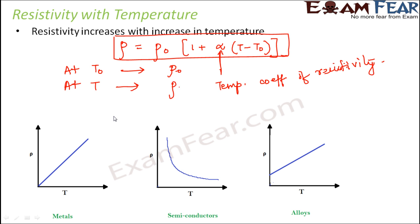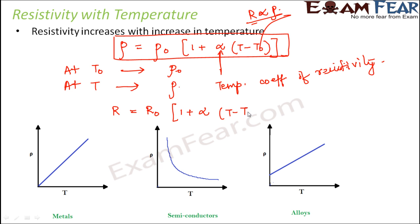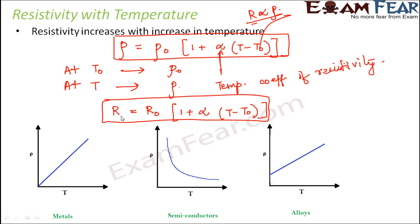Since resistance depends on resistivity (R = ρL/A), when resistivity changes, resistance also changes. On similar grounds, the variation of resistance with temperature is written as: R = R₀[1 + α(T − T₀)]. Since ρ and R are directly proportional, you can replace ρ with R in the equation.